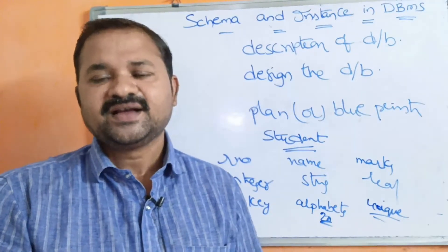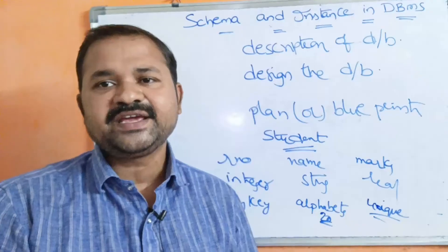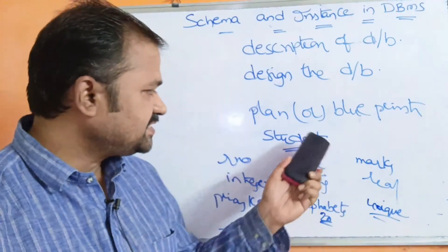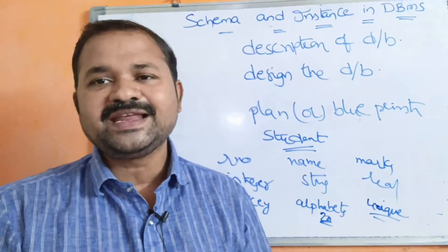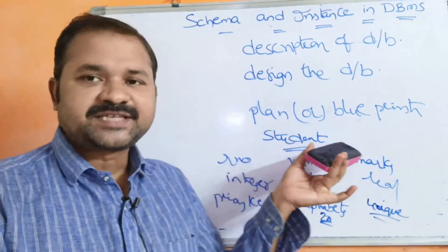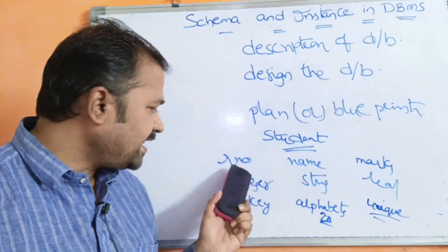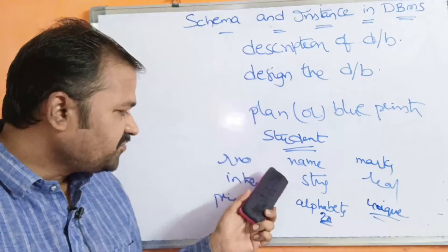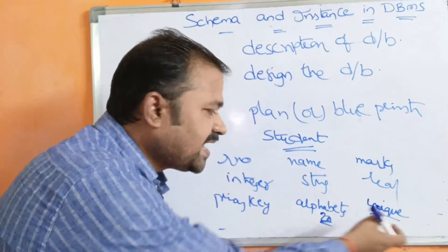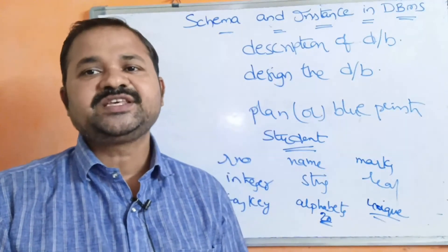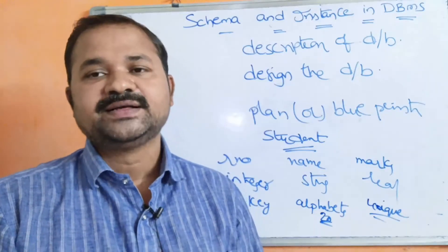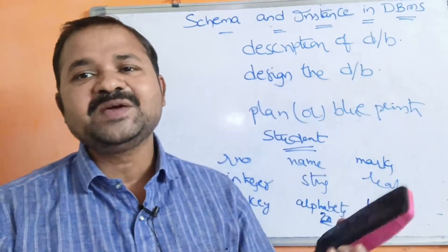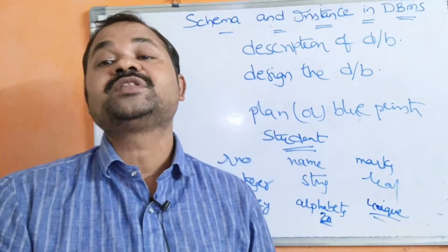We have various constraints such as candidate key and foreign key — we will discuss all those constraints later. So schema mainly contains the table name, column names or field names, along with data types and the possible constraints. Schema mainly defines the structure of the database and provides the description about the database.